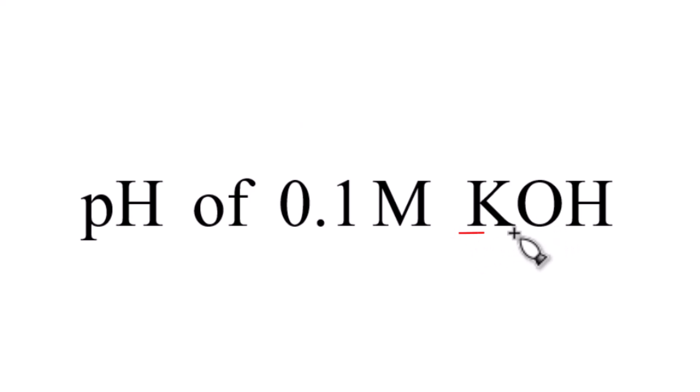We know it's a base because we have a metal and then we have this OH group. The OH group, that's the hydroxide, and the whole thing has a negative charge. Then the potassium has a positive charge. We need to know that before we start trying to find the pH.